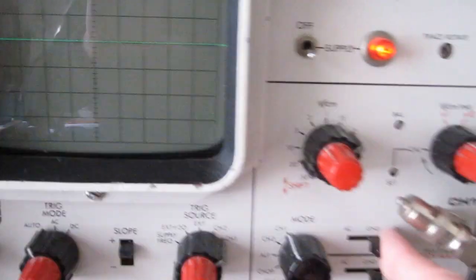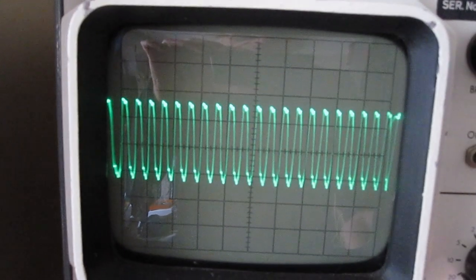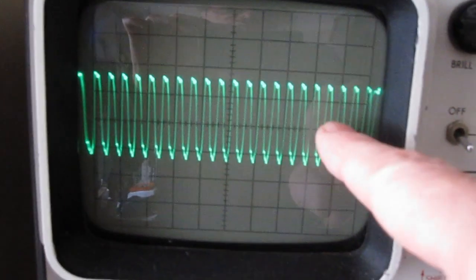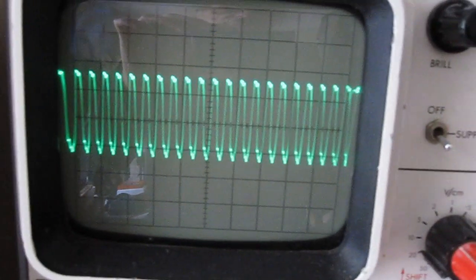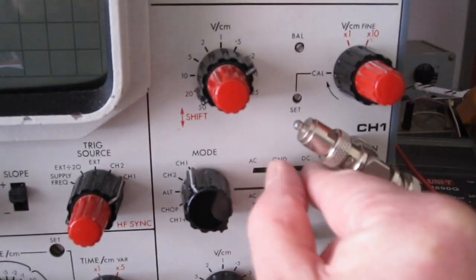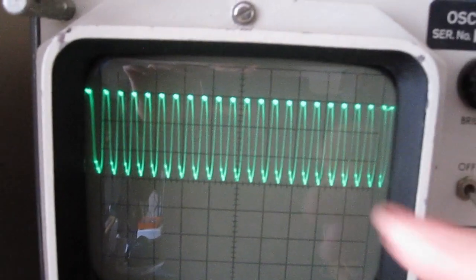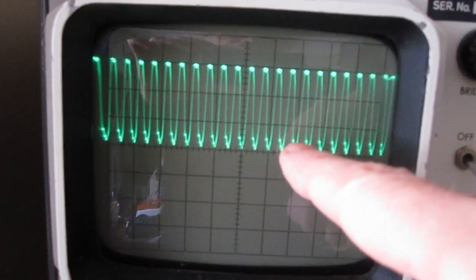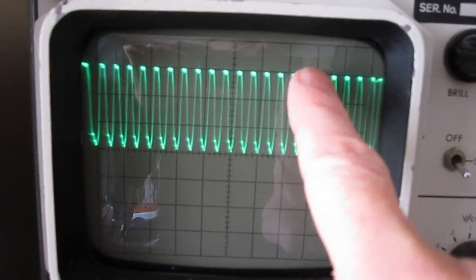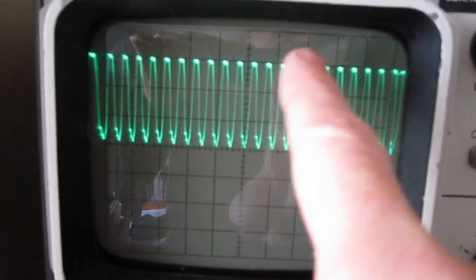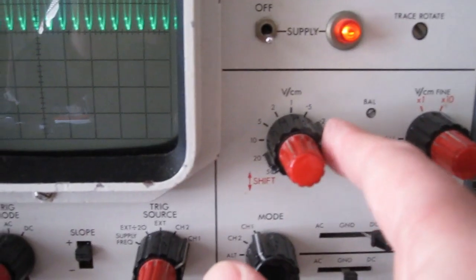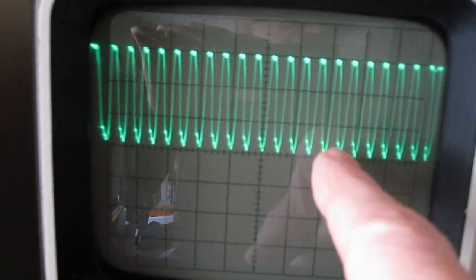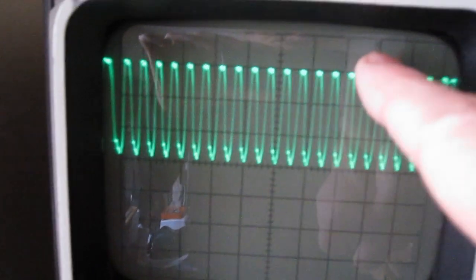When I switch the switch to AC then you have of course above and below the zero, the sinus and when I switch to DC then you see that it is switching between zero and point two per division so it's switching between zero and point six volt.